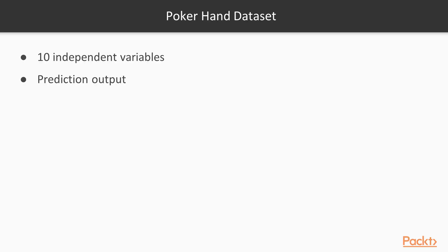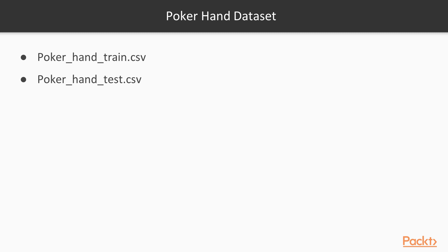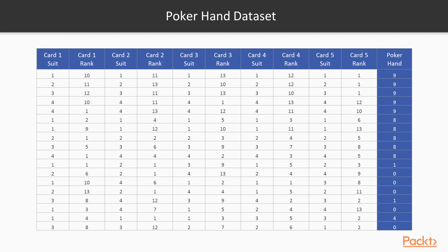In the poker hand dataset, as mentioned previously, we have 10 independent variables — two features for each card of the hand — and we have a prediction column. This dataset has two files: the first one is the poker hand train CSV file and the second one is the poker hand test CSV file.